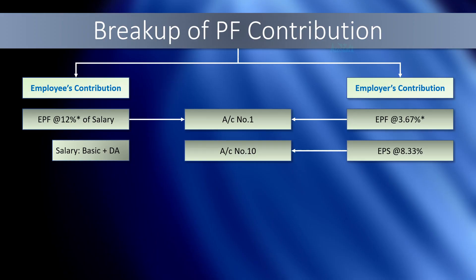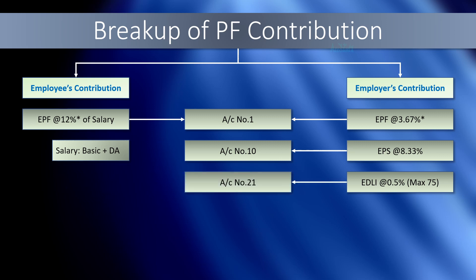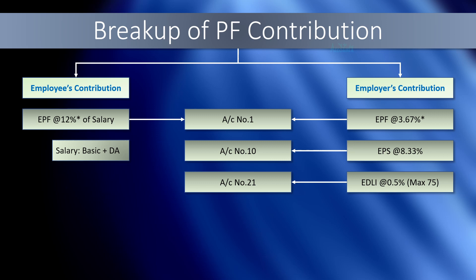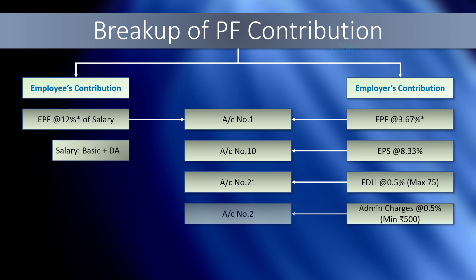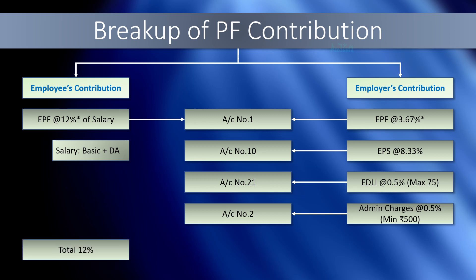In addition to this, the employer also makes other contributions: EDLI contribution at 0.5% subject to a maximum of 75 rupees per employee, credited to account number 21. EDLI is Employee's Deposit Linked Insurance — basically an insurance cover where in case of death of the employee, the nominee gets a lump sum up to 7 lakh. Plus, the employer also pays PF admin charges at 0.5% subject to a minimum of 500 rupees per month, credited to account number 2. So the employee's contribution remains at 12%, but the employer makes an additional 1%, making the total employer contribution 13%. Let's consider a simple example.